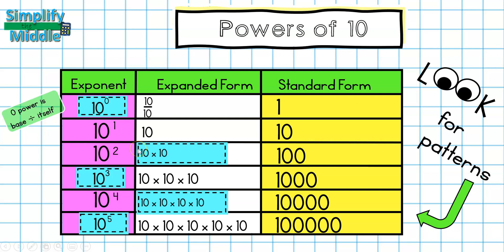There seems to be a direct relationship between our exponents and our standard form. Take a moment to see if you can figure out what that relationship might be. The pattern that you should have found is that the exponent is going to match the number of 0s in the standard form.